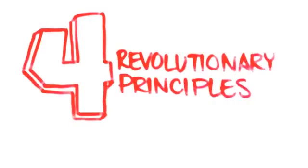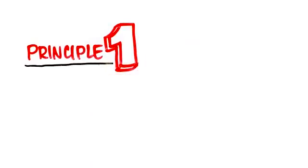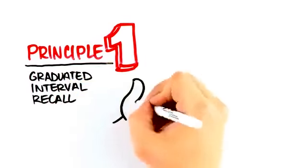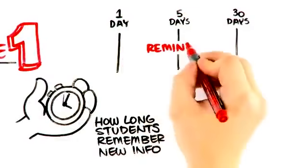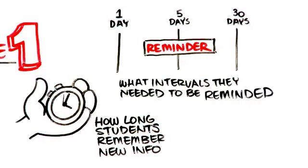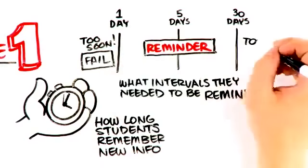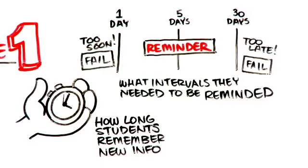He defined four revolutionary principles that form the backbone of his unique methodology. Principle number one, graduated interval recall. Dr. Pimsleur timed how long students remember new information and at what intervals they need to be reminded of it. If reminded too soon or too late, students fail to retain the information.